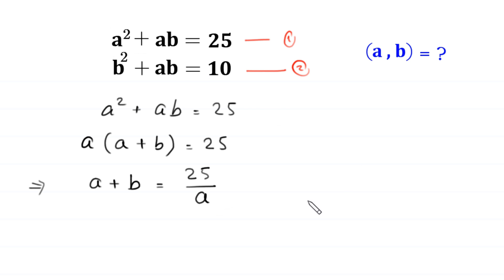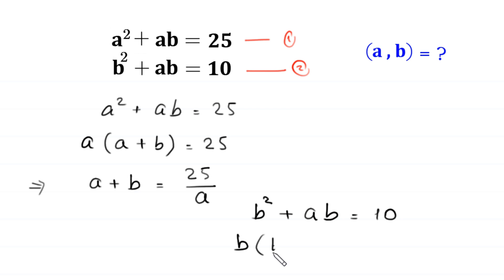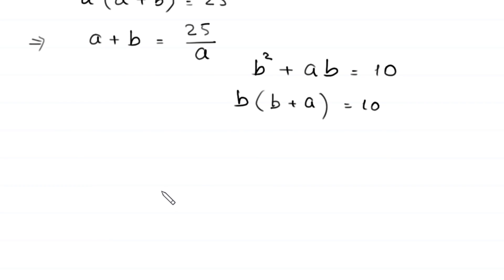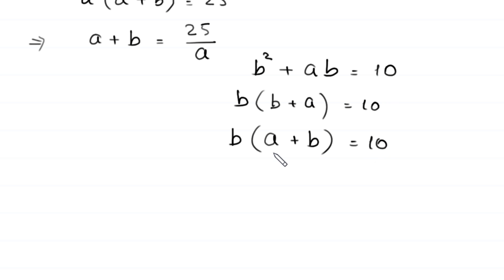From equation 2, b squared plus ab is equal to 10. From the left hand side, we can factor out b. So, b as common factor leaves b plus a is equal to 10, which means b times a plus b is equal to 10. Now, we replace this a plus b with the value 25 over a.